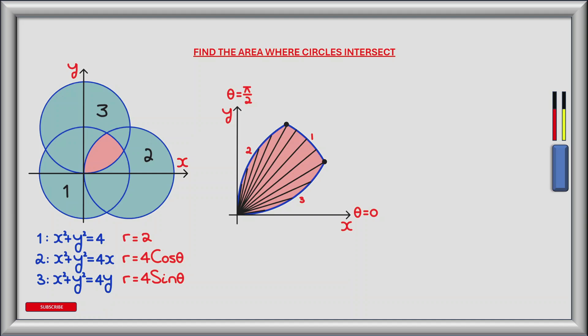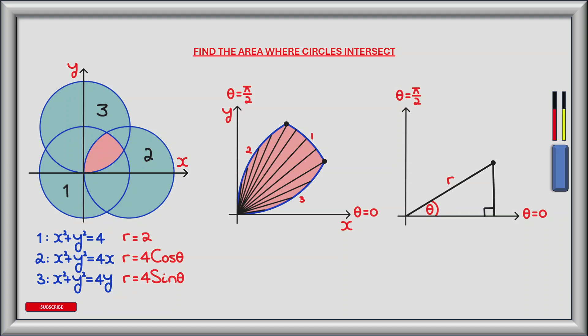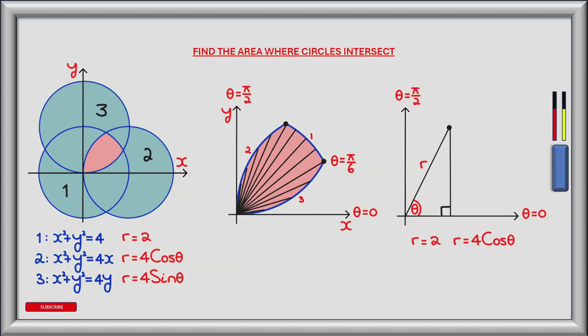We have three sectors to consider between theta equals 0 and theta equals pi by 2. The first sector begins at theta equals 0 and completes at the unknown angle where circle 3 meets circle 1. Equating the polar equations of circle 1 and circle 3, we get 4 sin theta equals 2, so sin theta equals one half, and therefore theta equals pi by 6 radians. The second sector begins at theta equals pi by 6 and completes where circle 1 intersects with circle 2. Equating those equations gives 4 cos theta equals 2, so cos theta equals one half, and therefore theta equals pi by 3 radians.